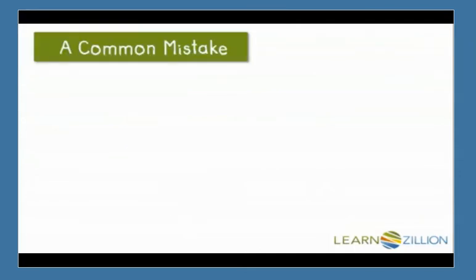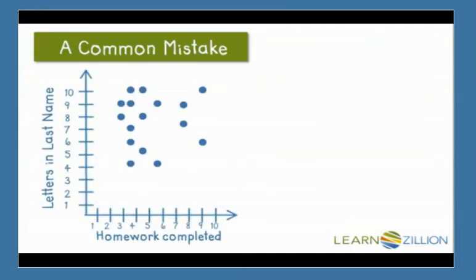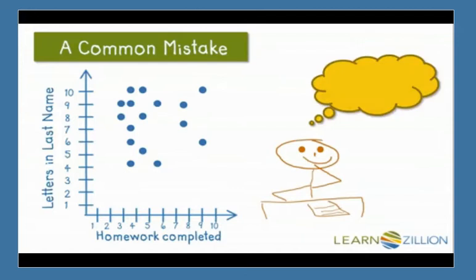A common mistake when studying clusters and outliers is assuming that there will always be a cluster and or an outlier, but that is not always the case. In some cases, such as this graph, there is no cluster of points, therefore there is no outlier. Some scatterplots will have a cluster, but will not have an outlier because the points are in such a strong relationship.